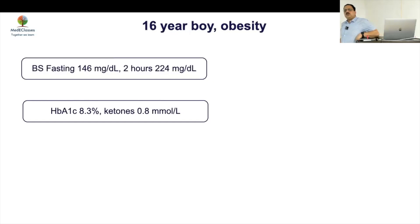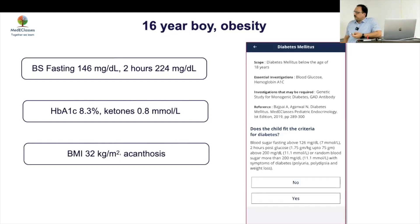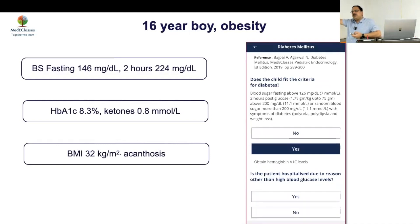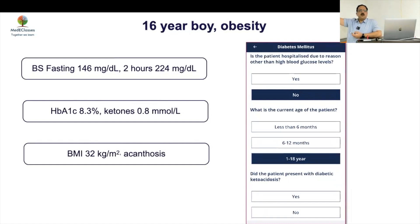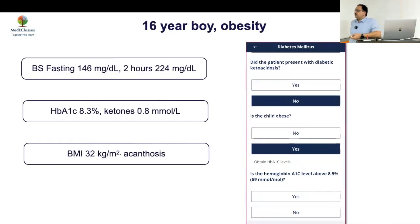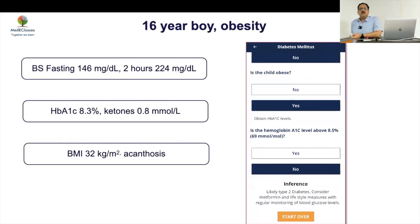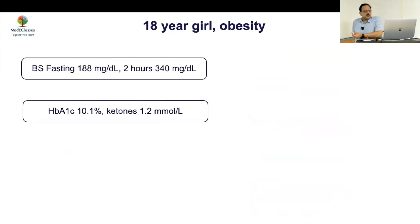Third case: a 16-year-old boy with obesity, hyperglycemia, HbA1c 8.3, ketones 0.8, BMI 32, and acanthosis present. This is obesity without DKA — more than one year obese, no DKA — this is most likely type 2 diabetes. Because the HbA1c is not very high, you can start on metformin alone in this setting.